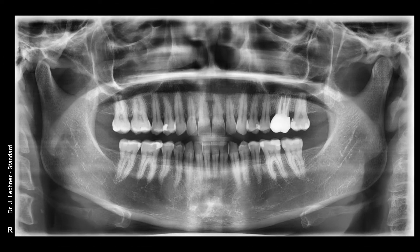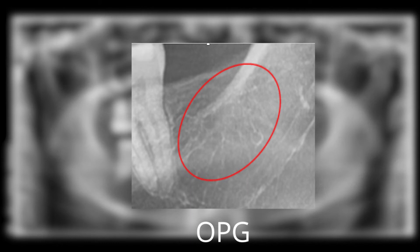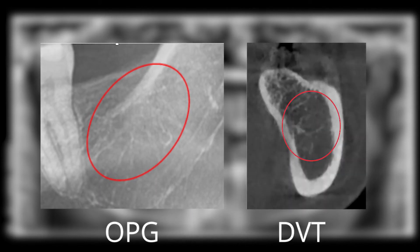The x-ray image, an OPG at the top left, shows no suspicious bone structures in the area of 3,8 marked in red. The x-ray image on the right shows the area 3,8 in the DVT cross-section. Again, no clear inflammatory changes or osteolytic structures are visible.